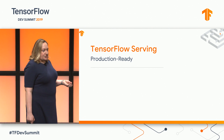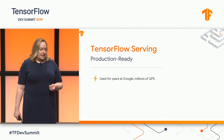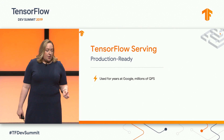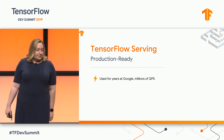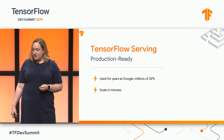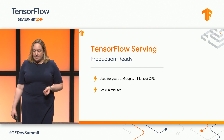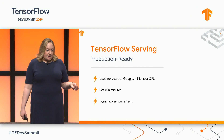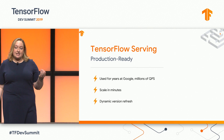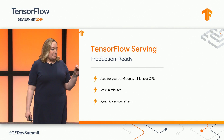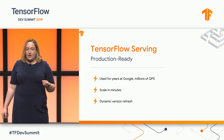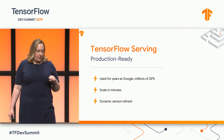TensorFlow Serving is production ready. This is what we use to serve many of our models inside of Google — we've served millions of QPS with it. You can scale in minutes, particularly if you use the Docker image and scale up on Kubernetes. We support dynamic version refresh, so you can specify a version refresh policy to either take the latest version of your model or pin to a specific version. This can be really useful for rollbacks if you find a problem with the latest version after you've already pushed.